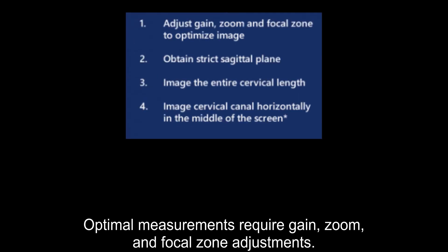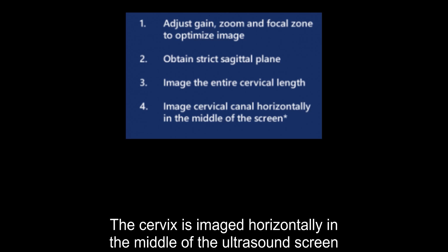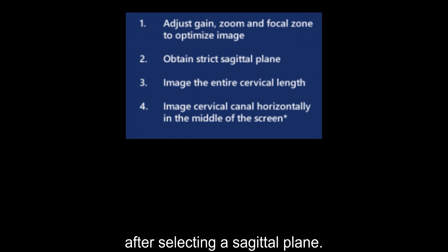Optimal measurements require gain, zoom, and focal zone adjustments. The cervix is imaged horizontally in the middle of the ultrasound screen after selecting a sagittal plane.